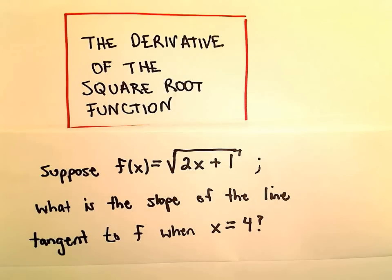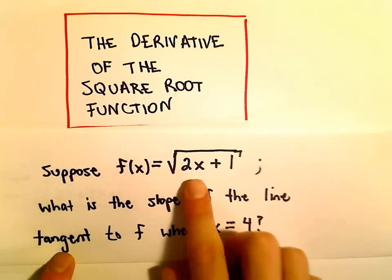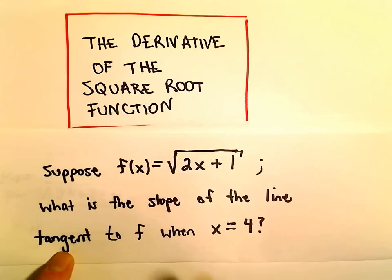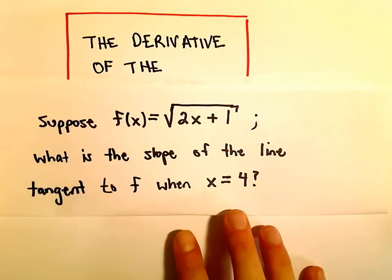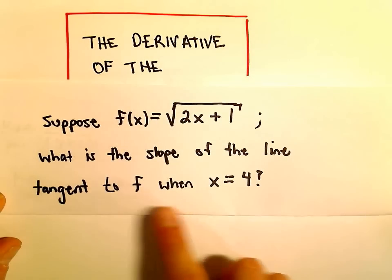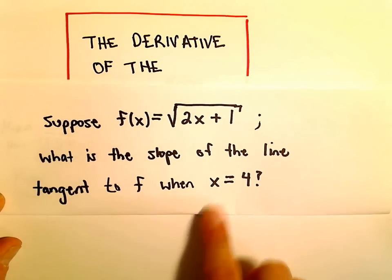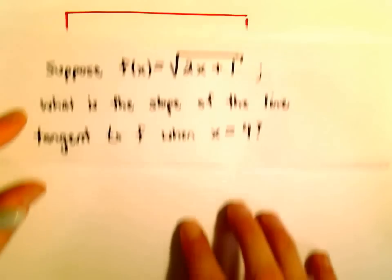In this example, what we're going to do is start with the function square root of 2x plus 1, and we're going to find the slope of the tangent line to our graph when x equals 4.